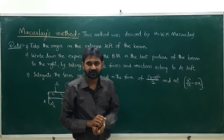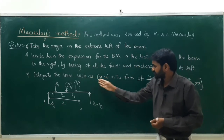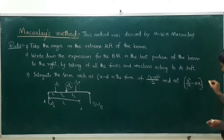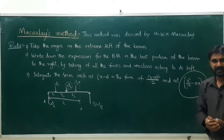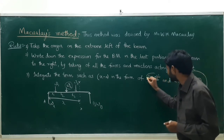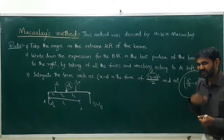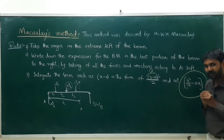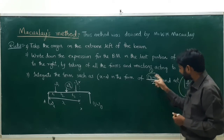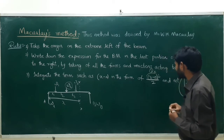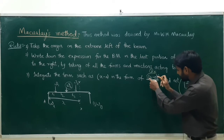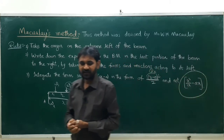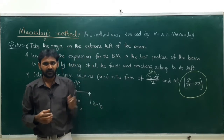Rule number three: integrate the term such as (x − a) in the form of (x − a)² / 2, and not as x² / 2 − ax. In mathematics, x and a are treated separately, but in Macaulay's method, (x − a) is treated as a single term. So (x − a)² is also treated as a single term, integrated to (x − a)² / 2. These are the basic rules of Macaulay's method.